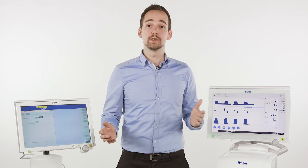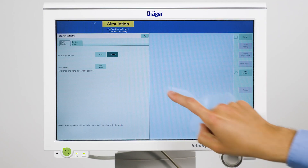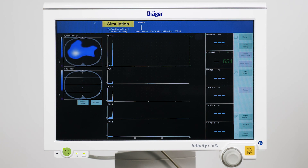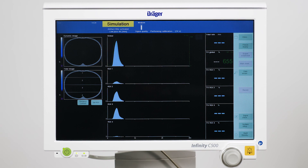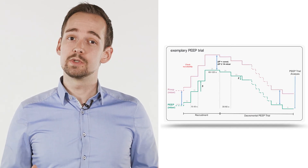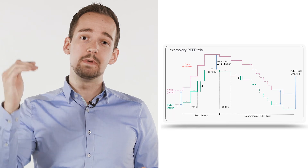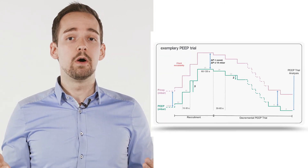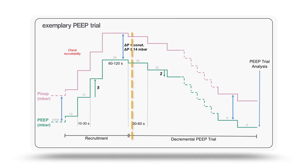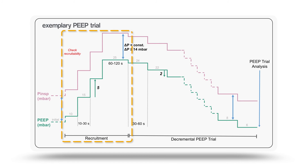Once a connection is established, we can start an EIT measurement by POMOVISTA to monitor the patient's ventilation distribution. In order to assess the lungs response to different PEEP levels, we need to perform a PEEP trial. One possible workflow could be an initial recruitment maneuver followed by a decremental PEEP trial.